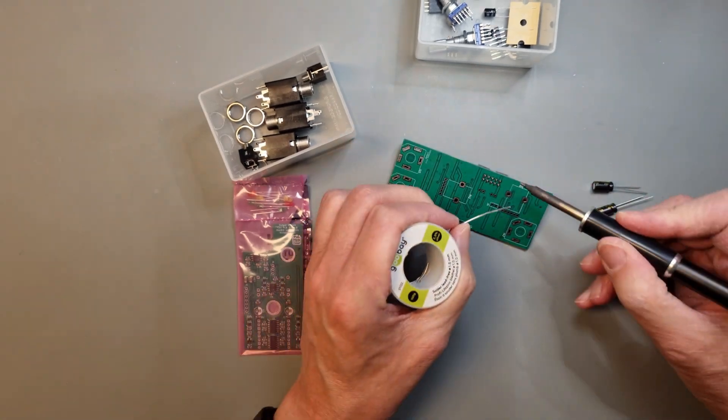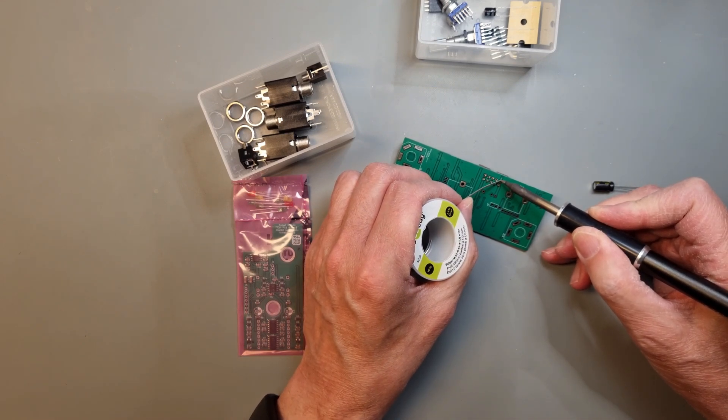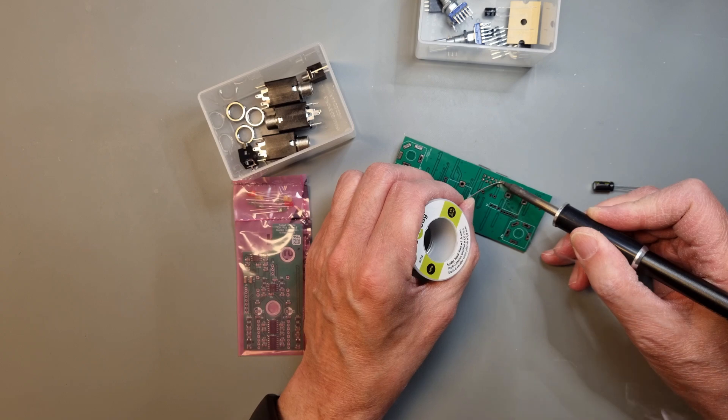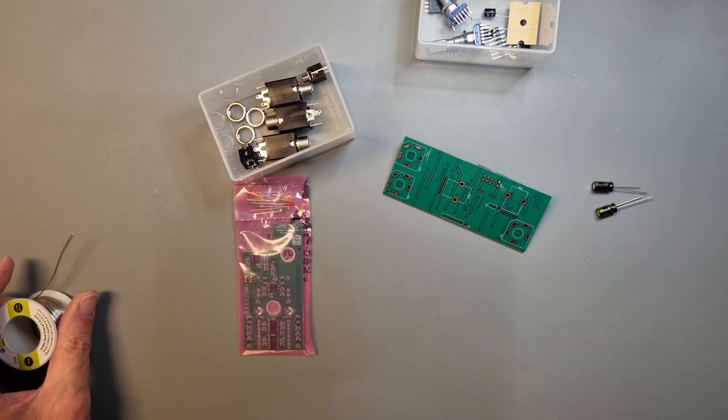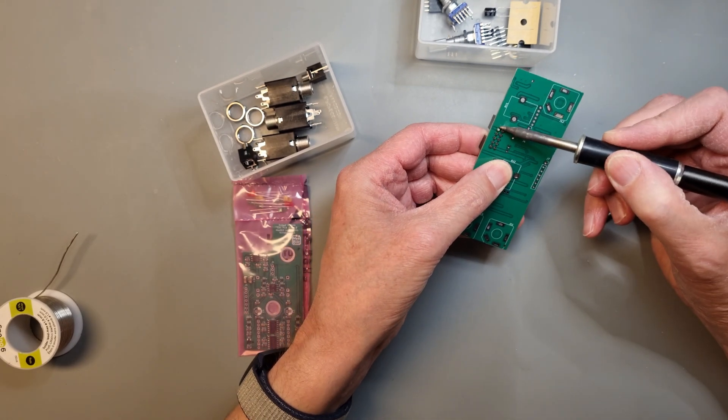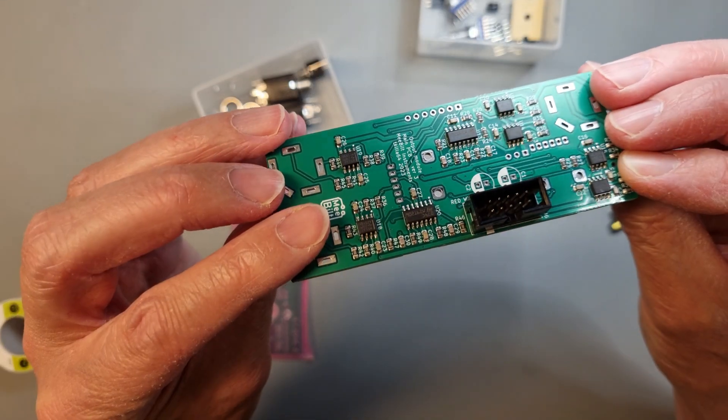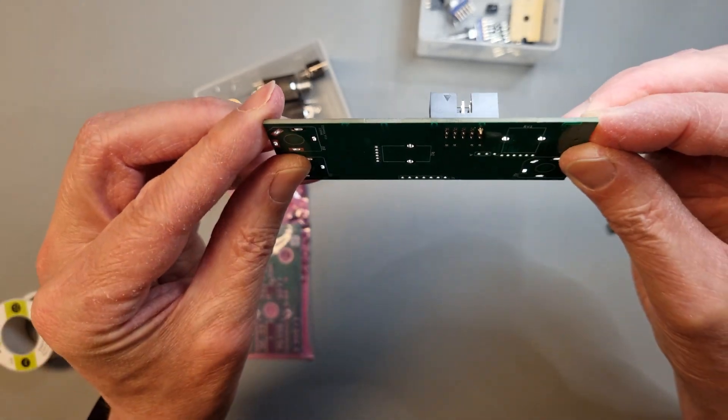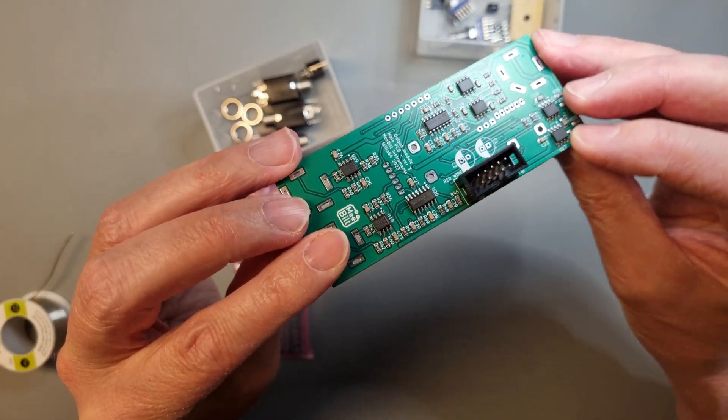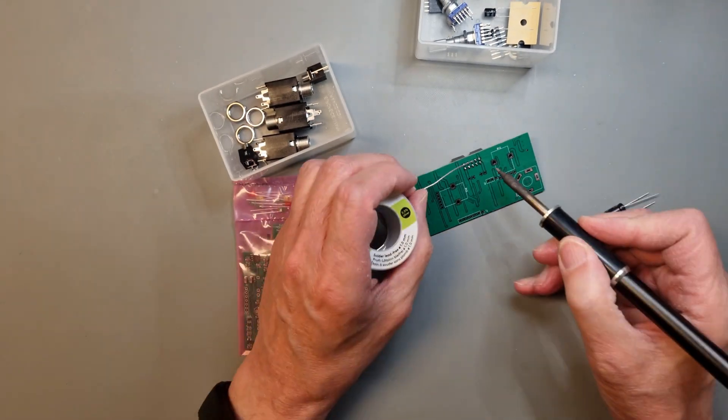One way of making sure that the connector housing is properly seated is to solder one leg and reheat the solder joint while pressing the connector in place. After that you can solder the rest of the legs.